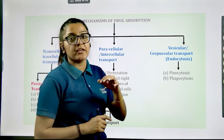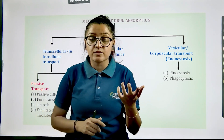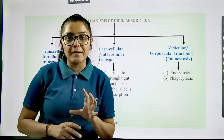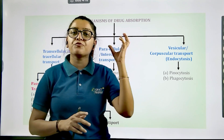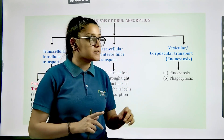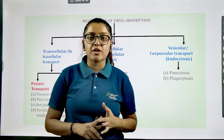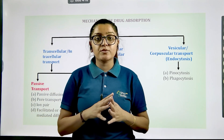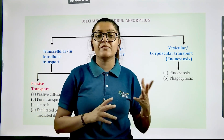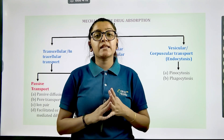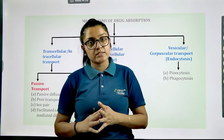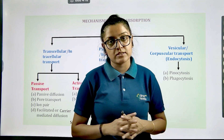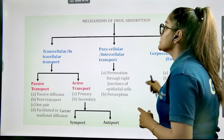In paracellular or intracellular transport, which occurs mainly through tight junctions, we need to consider whether the drug permeates through the tight junctions or through the persorption mechanism — whereby dead enterocytes create temporary openings to facilitate the transport mechanism. The third type is vesicular transport, just like how an amoeba engulfs food material, which is the phagocytosis process, and we also have the pinocytosis mechanism.